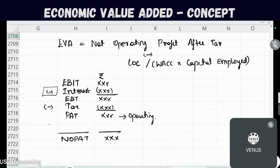To convert Profit After Tax into Net Operating Profit After Tax, we have to add back the interest portion — specifically, the after-tax portion of interest.